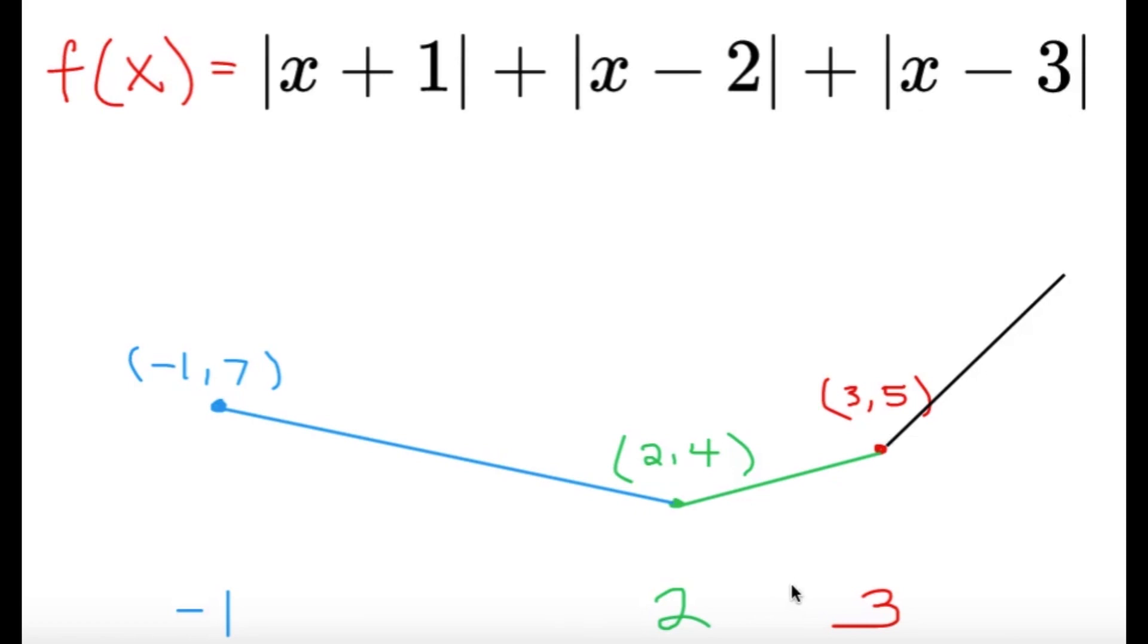You can try to test values in each region. For example, in this part, between negative 1 and 2. If I have x to be between negative 1 and 2, x plus 1 is positive, x minus 2 and x minus 3, they're both negative. So, it will resemble the graph of, we just simply remove the absolute value for the first one and then we negate the x minus 2 and the x minus 3. So, it would resemble a graph of 6 minus x and it makes sense because it's a line with a negative slope.